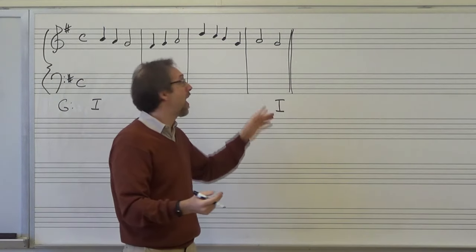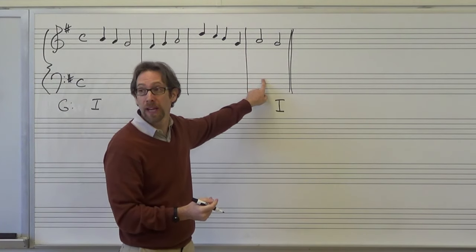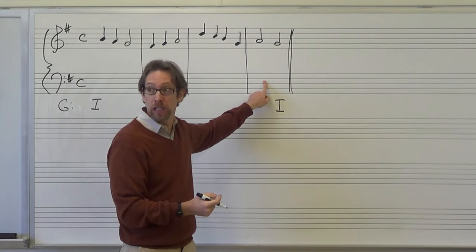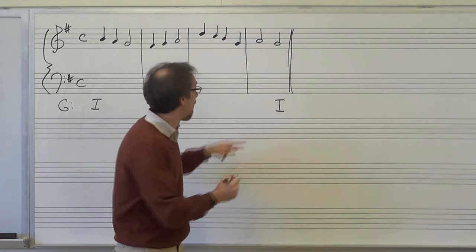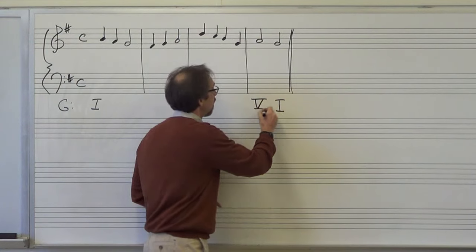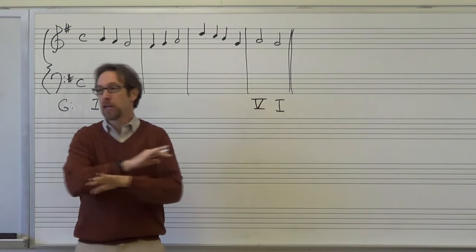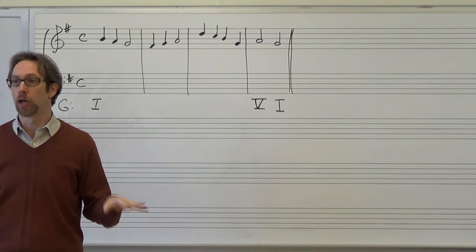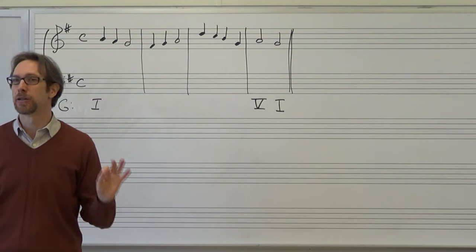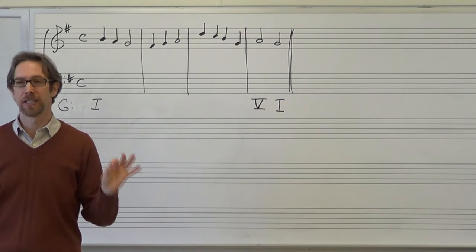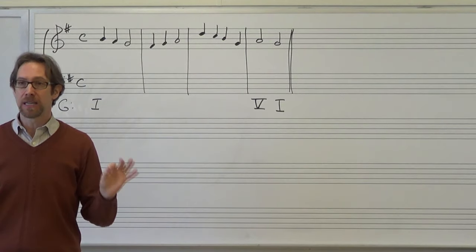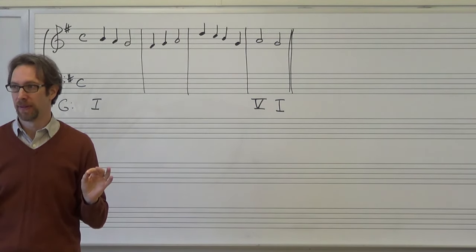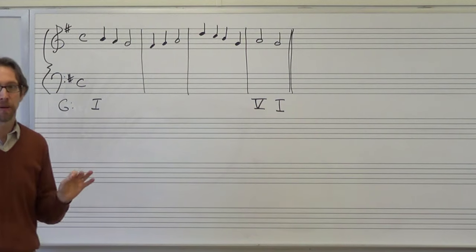Next I look at my penultimate chord and I want that to be a five chord. Is A in the five chord in G major? The answer is yes. I'll put my five chord. I make no decisions about inversions at this juncture — zero inversion decisions. I need to make a good harmonic progression, and that's what I'm going to start with.